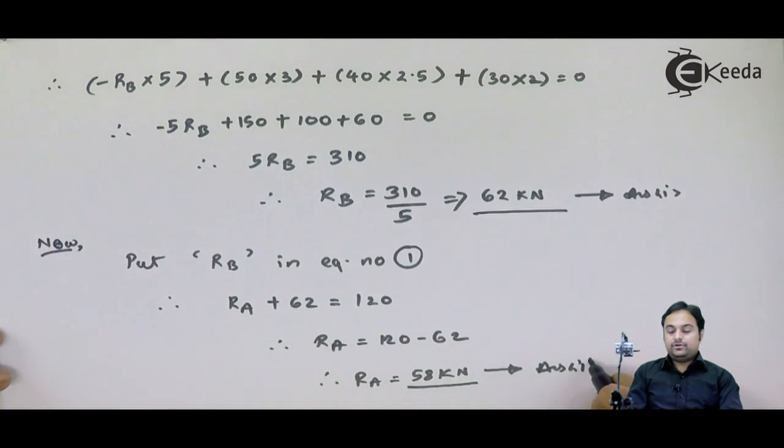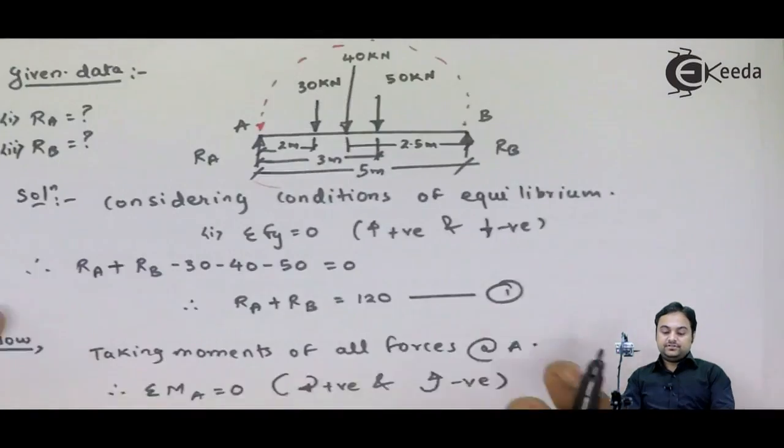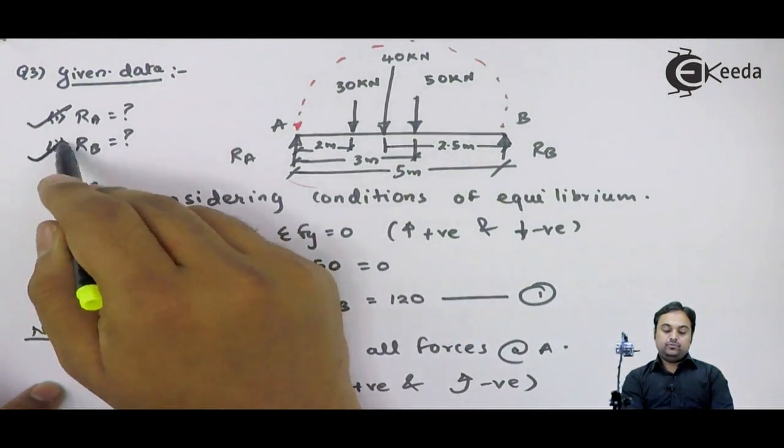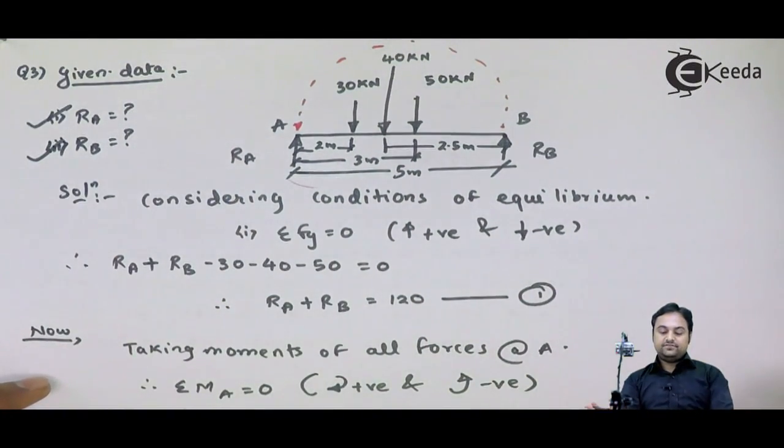As we look into the question, there were two things asked to calculate, those were RA and RB, and we have found both the values, and with this we complete the solution.